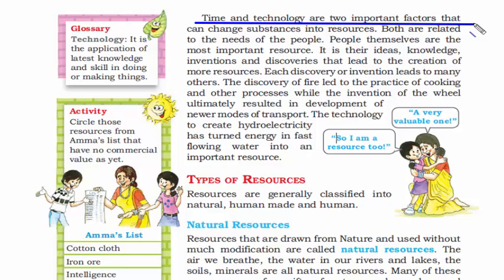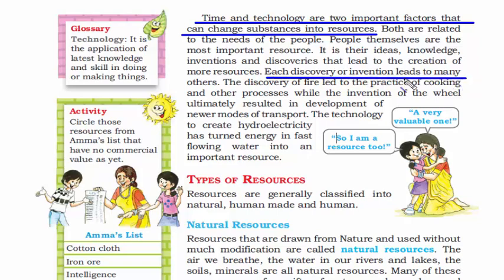Time and technology are two important factors that can change substances into resources. To see any kind of change, you need time. Technology is the means that helps you bring that change — for example, machinery, computers, and gadgets. Most things around us were discovered or invented many years ago, and over the years we have modernized them. For example, hydroelectricity is a technology that turns the flow of water into electrical energy, making it an important resource.